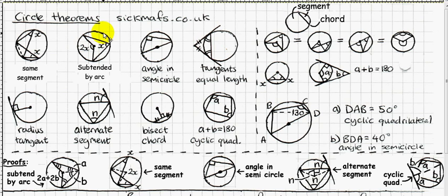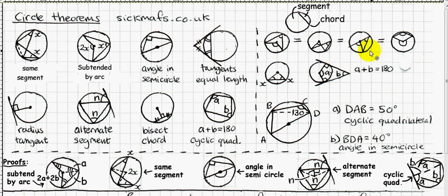This rule can be drawn in a couple of different ways. In each case, there's an angle at the centre and an angle at the circumference, both coming off the same two points. Those two points subtend both angles, whether drawn one way or another.